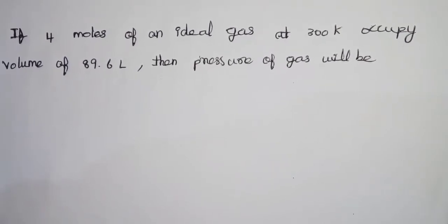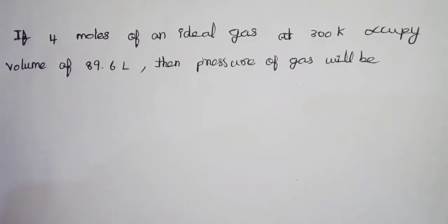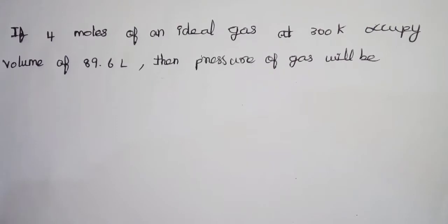To find the pressure of the gas, we have: number of moles is 4, this is an ideal gas, temperature is 300 Kelvin, and volume is 89.6 liters.